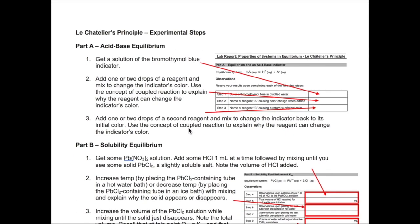Okay, now let's wrap up this video series by discussing the experimental steps you need to do. Make sure you have your notes ready to write this information down so you have a practical guide for the experiment when you're in the lab. There are four parts to this lab. For part A, which is the acid-base equilibrium experiment, you need to do the following.